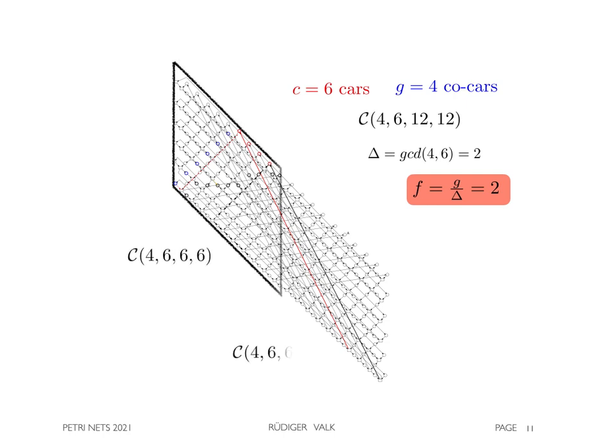The cycloid is a composition of two copies of the cycloid 4, 6, 6, 6, 6.